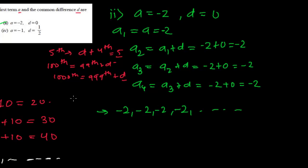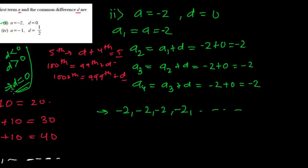So what we learn from here is that in an arithmetic progression, the common difference can also be zero. The common difference may be greater than zero, or less than zero, or equal to zero — it may be anything. So keep this concept in your mind.